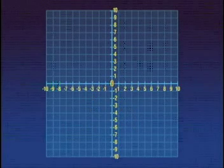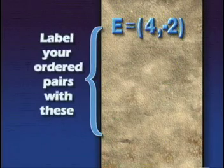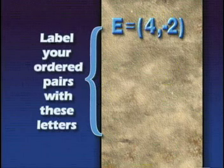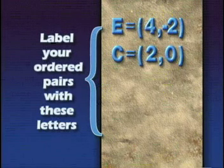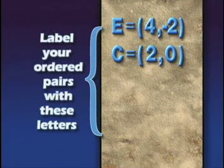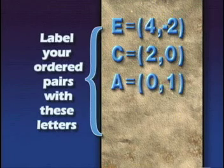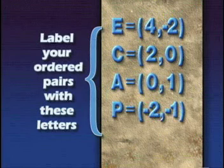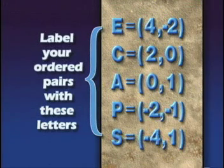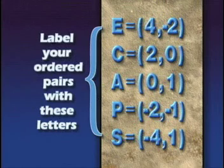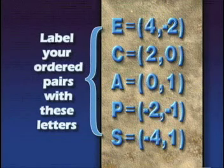Working in groups, let's see if you can graph the following coordinate pairs: E equals (4, -2), C equals (2, 0), A equals (0, 1), P equals (-2, -1), and S equals (-4, 1). Teachers, this would be a good time to pause while students give this a try.